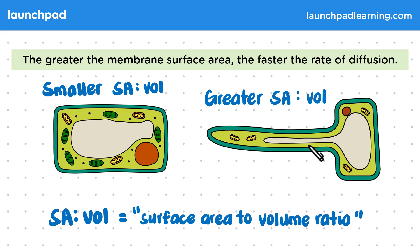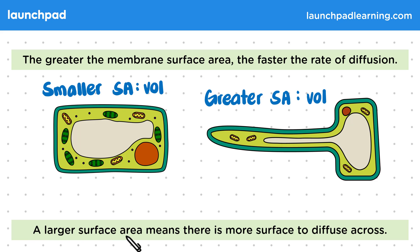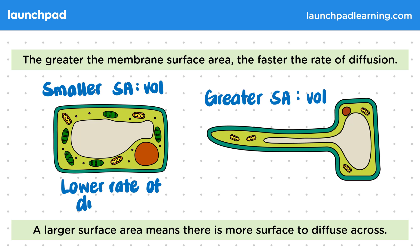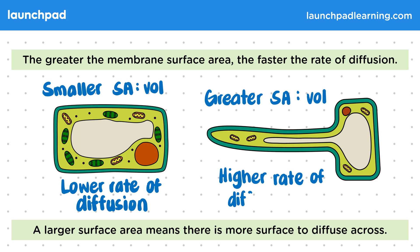You might recognise that the cell on the right is a root hair cell. In which of these cells will the rate of diffusion be higher? A larger surface area means there is more surface to diffuse across. Therefore, the cell with a smaller surface area to volume ratio will have a lower rate of diffusion, while the cell with a greater surface area to volume ratio will have a higher rate of diffusion.